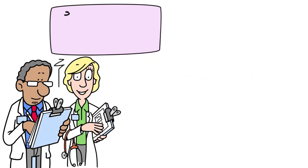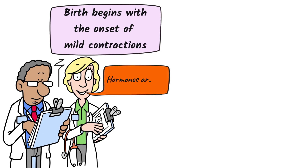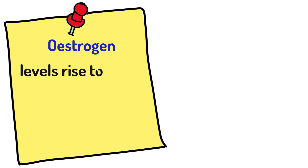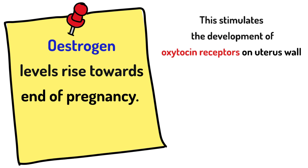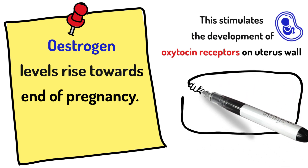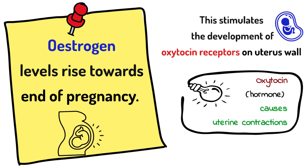Birth begins with the onset of very mild contractions, but the most important thing to remember is that hormones play a huge role in birth and there are many of them. One hormone is oestrogen, and oestrogen levels rise towards the end of pregnancy. Oestrogen is very important because it stimulates the development of oxytocin receptors on the uterus wall, and oxytocin is a hormone that causes uterine contractions.